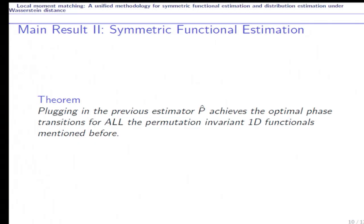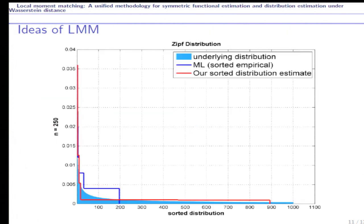Our second result is about the symmetric function estimation. For the estimator P-hat, when we plug in P-hat into all the permutation invariant 1d functions as mentioned before, it achieves the optimal phase transition automatically. So this result simply shows that to estimate the symmetric function, we need to replace the empirical distribution by the new estimator. So the plug-in approach still works, but the estimator to be plugged in should change to this estimator.